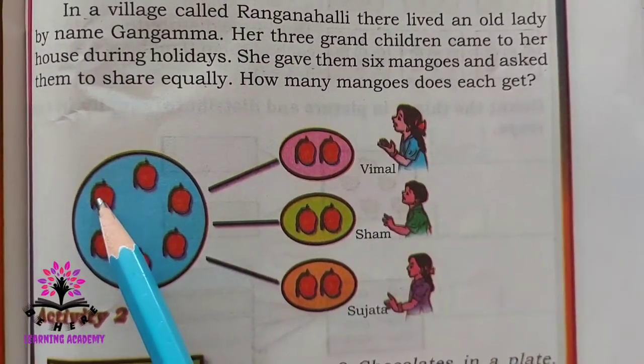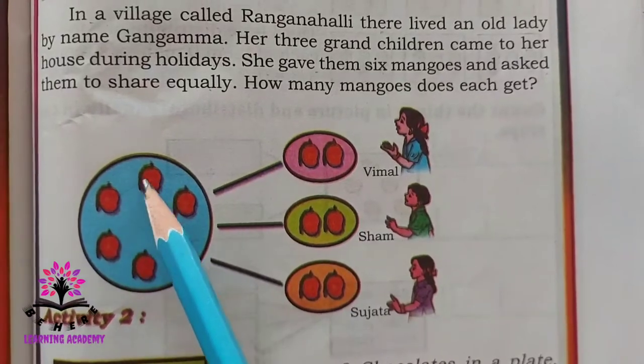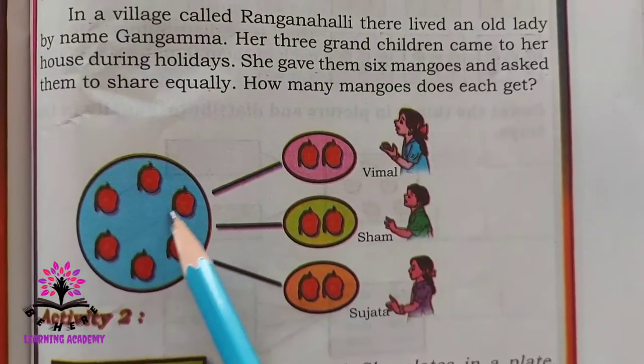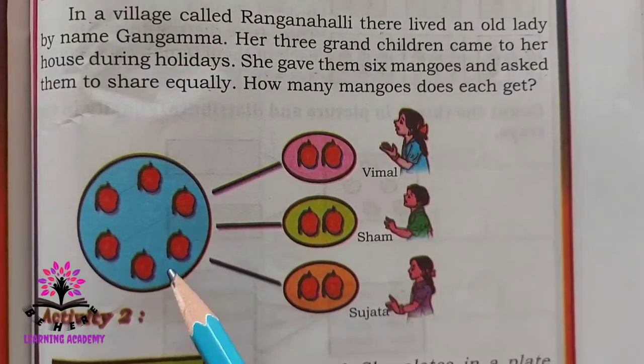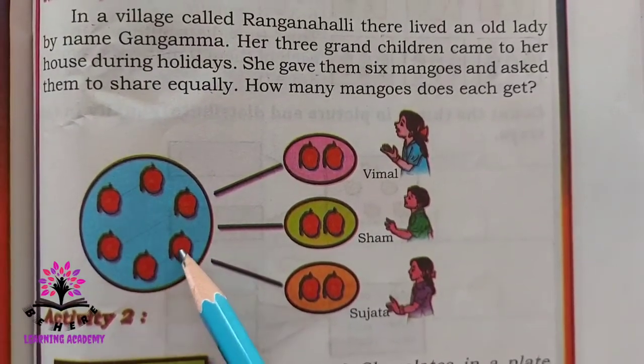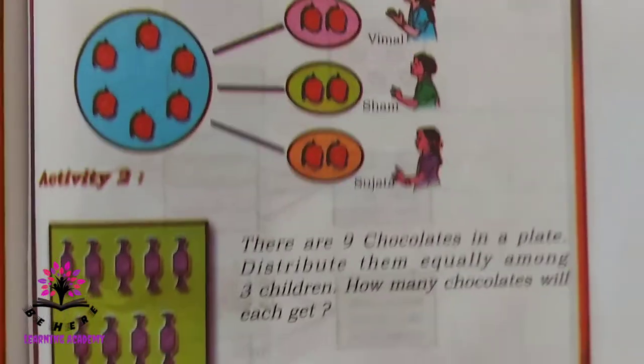Here there are six — this is for the first child, second child, and the third child.